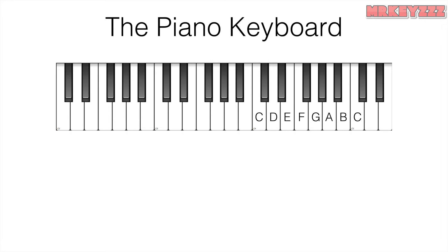Now let's take a look at flats. Flats are the closest notes to the left of a white key. Here's C, so this must be C flat, which is also known as B. Here's B and B flat. Here's A and A flat. G and G flat. F is here, but F flat is the white key to its left, also known as E. Here's E and E flat, and finally D and D flat.